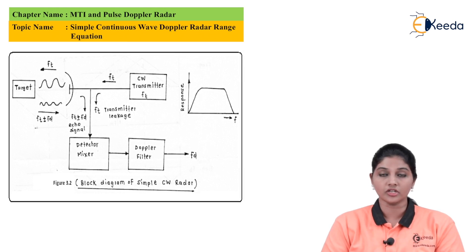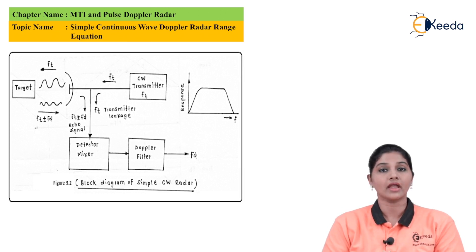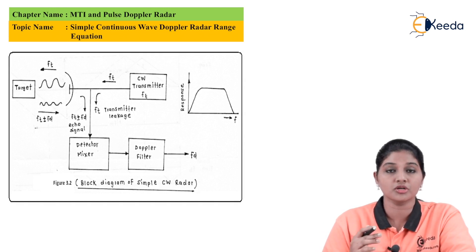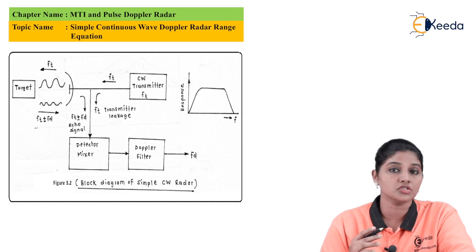In continuous wave radar, the transmitter generates an unmodulated carrier wave transmitted by an antenna used as a transmitting antenna, since we are using a frequency separation method. The block diagram shows a simple continuous wave radar operating on the principle of frequency separation. A single antenna is used for both transmission and reception. The transmitter generates oscillations at frequency FT, transmitted towards the target, and the received echo signal has a frequency of FT ± FD. The receiver must be able to differentiate between the echo signal frequency and the transmitted signal frequency.